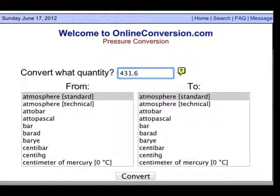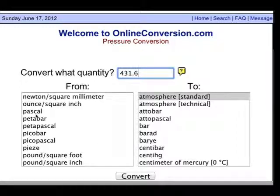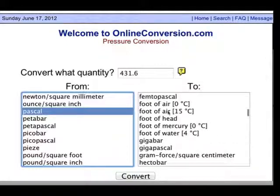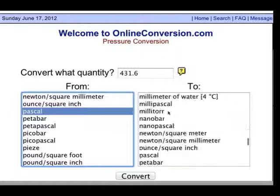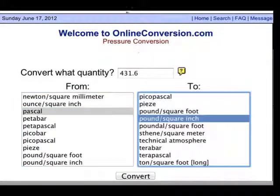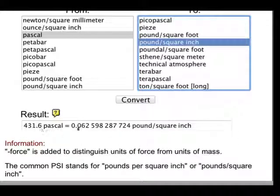The from is the from pascals. So scroll down here to pascals. The two is the unit we want to convert to. And so if we scroll down to pounds per square inch right there. And if you scroll up you see it's already done the conversion. There's the answer in pounds per square inch.